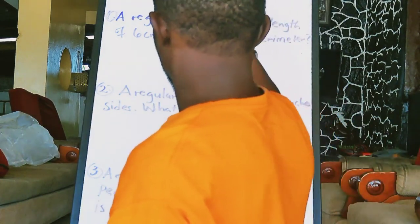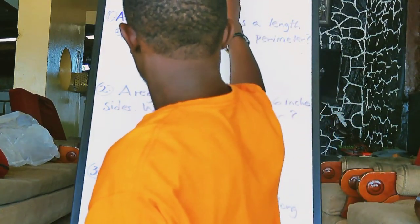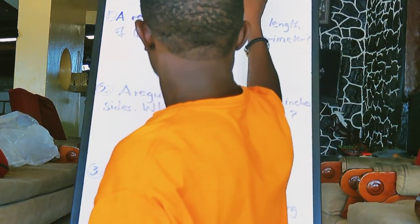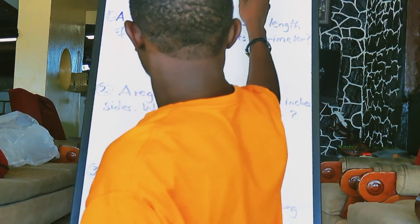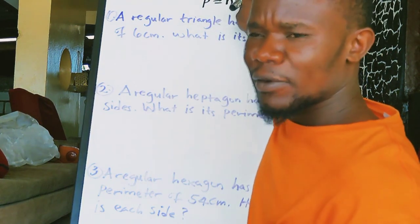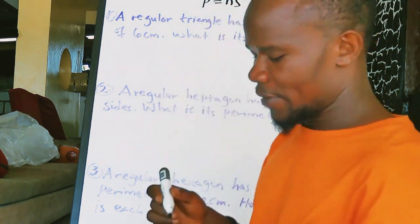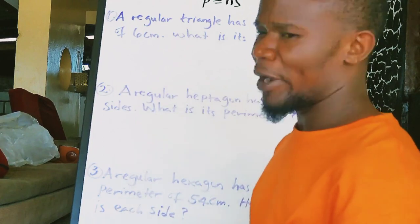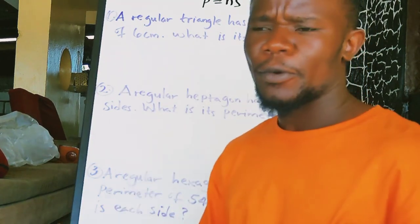So looking at this, the formula for it would be the perimeter would be equal to n times the side. The n meaning the number of sides, multiplied by the side. That will give you the perimeter of the triangle, or any other regular polygon.